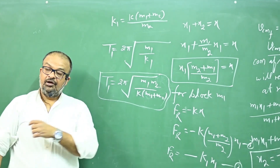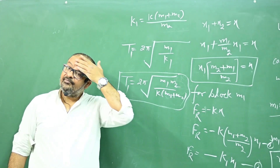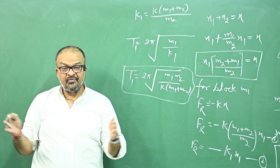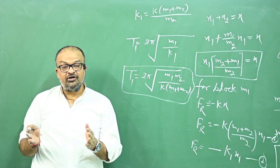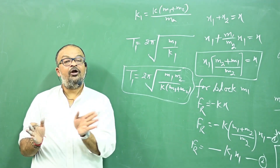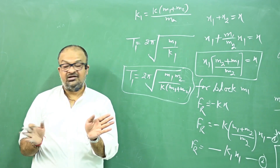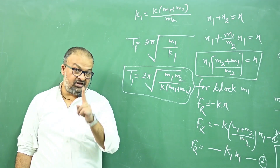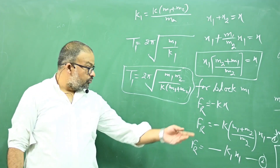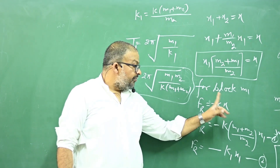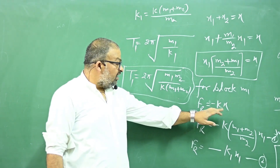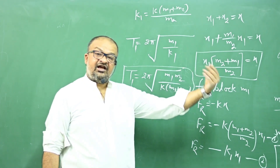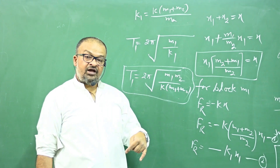Let's now understand this properly. The spring is compressed, total compression is x. The force applied on the first block is kx and on the second block is also kx, so the force on each block is kx. But you have to express this restoring force in terms of each block's own displacement — x1 for the first block and x2 for the second block.